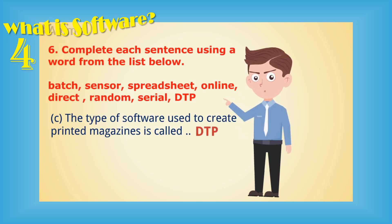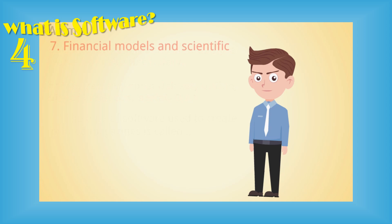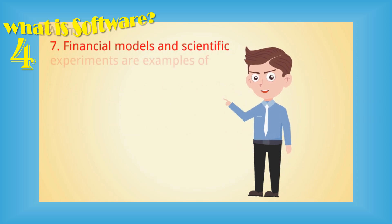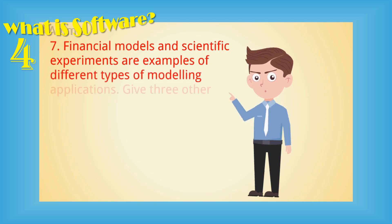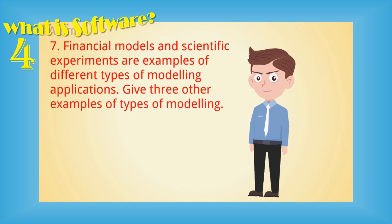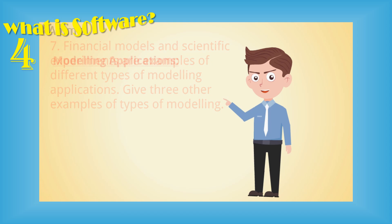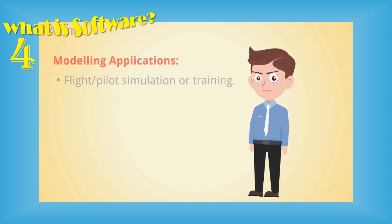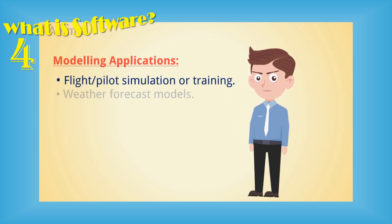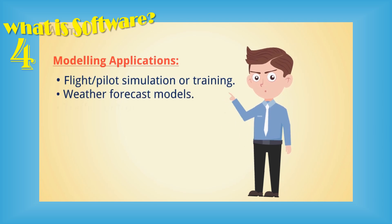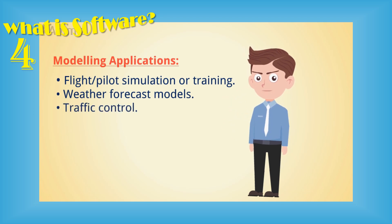Question number seven: financial models and scientific experiments are examples of different types of modeling applications. Give three other examples of types of modeling. Answer: flight or pilot simulation or training, weather forecast models, traffic control, and civil engineering models.